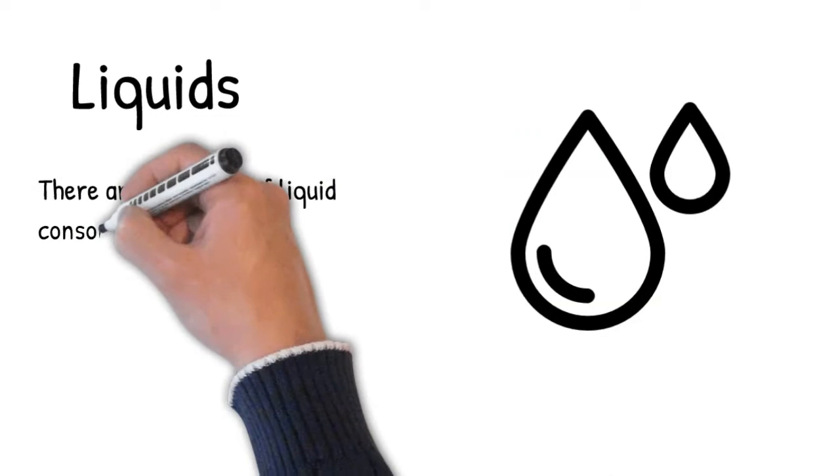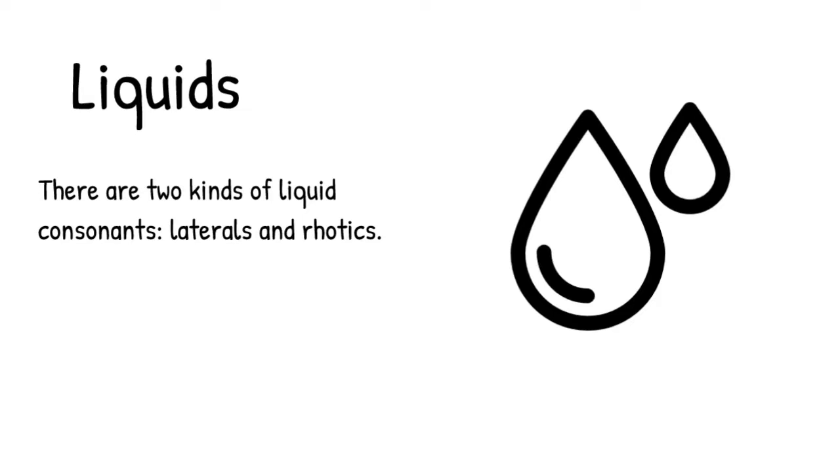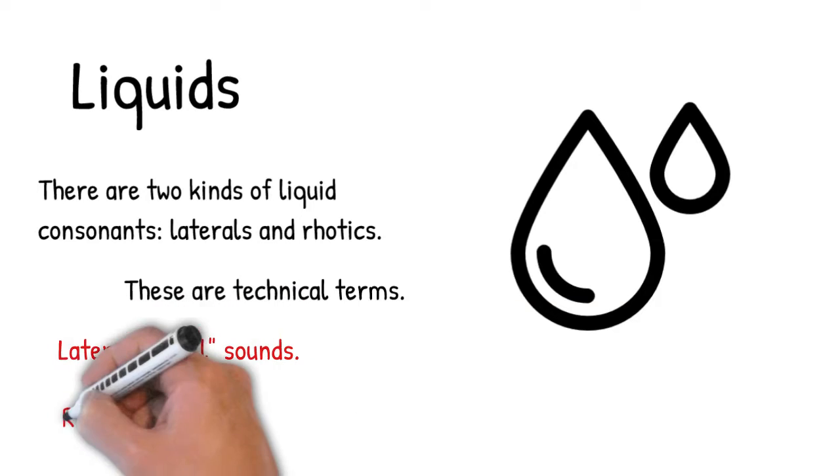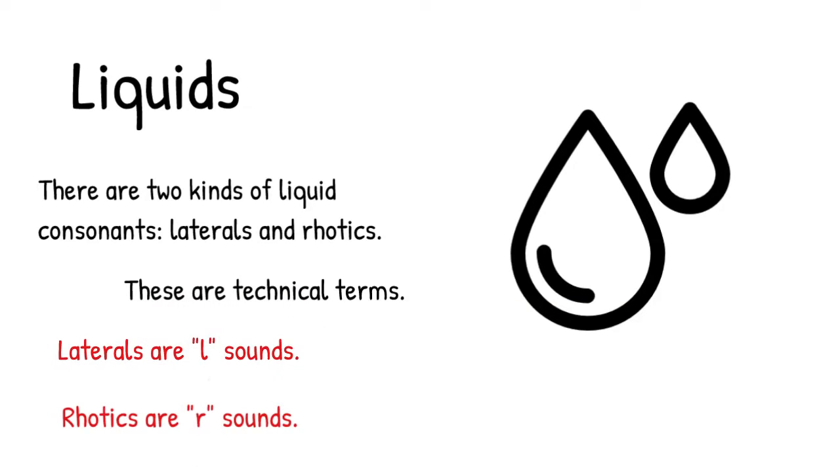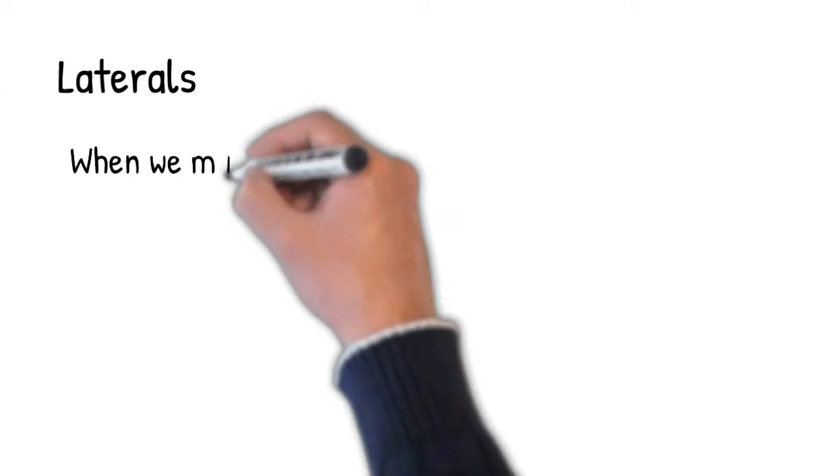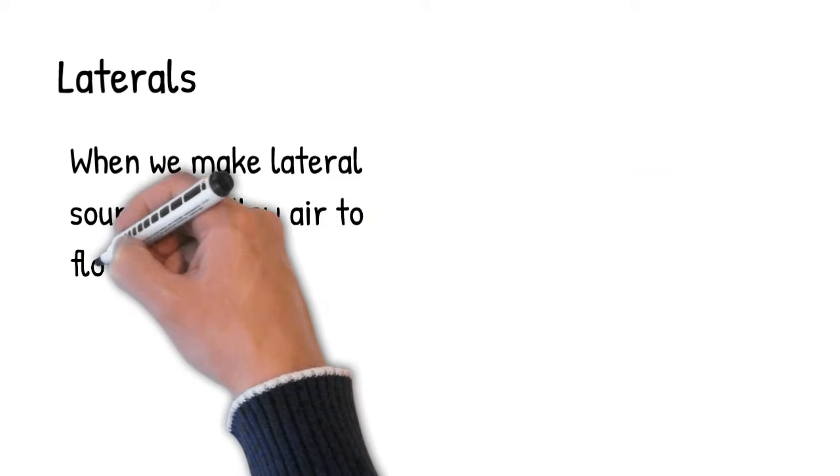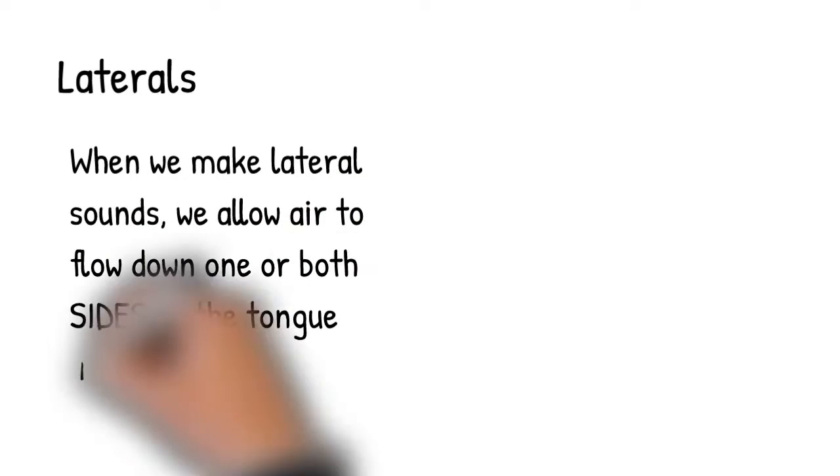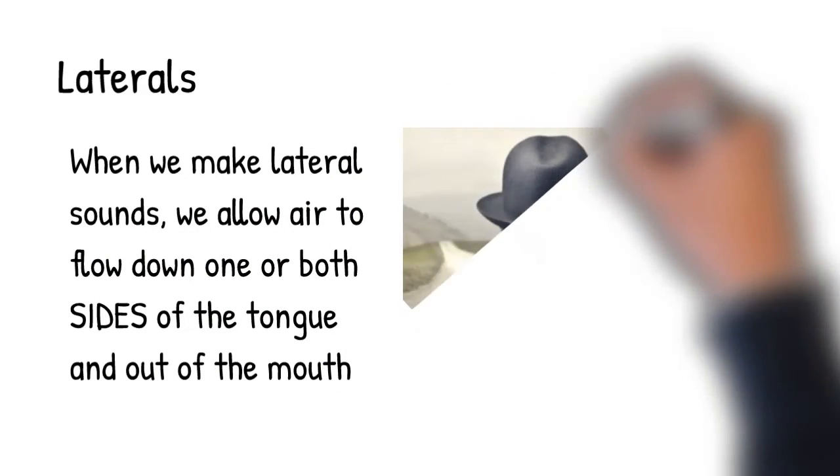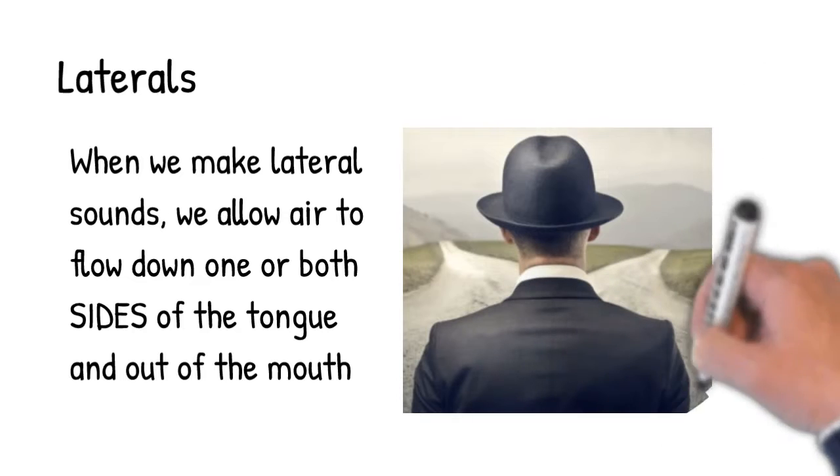Liquids come in two flavors, laterals and rhotics. Both of these are probably unfamiliar terms, but don't be intimidated. For our purposes, think of laterals as L sounds and rhotics as R sounds. What does it mean for a sound to be a lateral sound? Well, the answer lies in the word lateral, because when we make lateral sounds, we allow air to flow down one or both sides of our tongue.